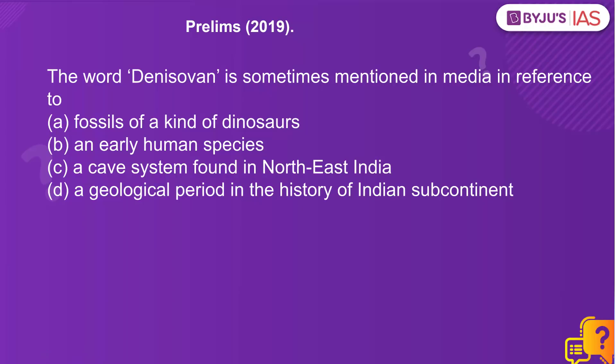Let's look at a previous year question from Prelims 2019: The word 'Denisovan' is sometimes mentioned in media in reference to — pause the screen and let me know the correct answer. The correct answer is an early human species. Denisovans are considered to be an extinct group and close relatives of Neanderthals. In a cave in Siberia, only a few fragments of bones were found, and that is how researchers got to know that Denisovans are the close relatives of Neanderthals.